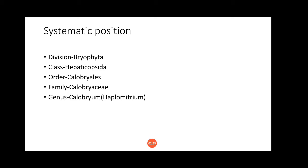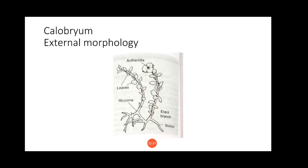The order Calobryales is a specific order that exhibits a strange combination of primitive and advanced features. The gametophytes are small, rhizomatous, and lack drought resistance. The plant body is differentiated into a basal branched creeping leafless plate-like structure which is underground, and from the rhizome arise the erect green leafy axes or branches. The leaves may be isophyllous or anisophyllous, having no midrib.